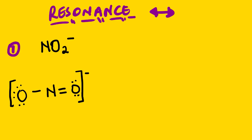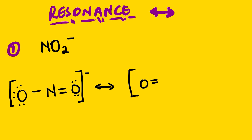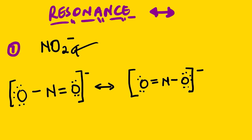The negative charge comes from this oxygen. Its resonance structure will be like this — the double bond will be on the second oxygen instead, and this one will have six lone pairs. These two we call resonance structures; they both represent the ion and you can see they are somewhat different.